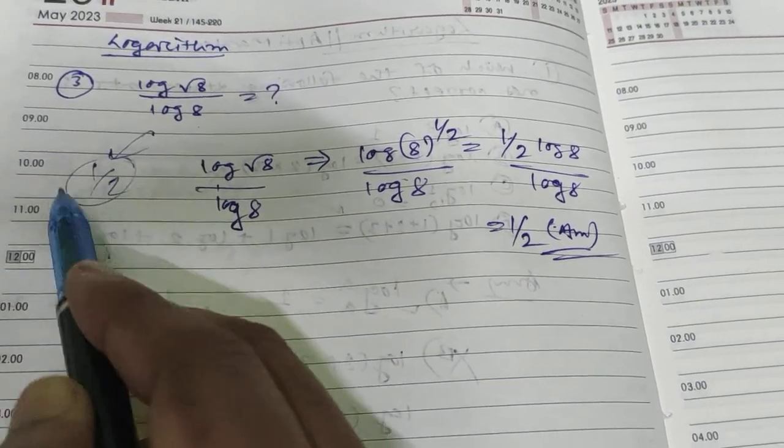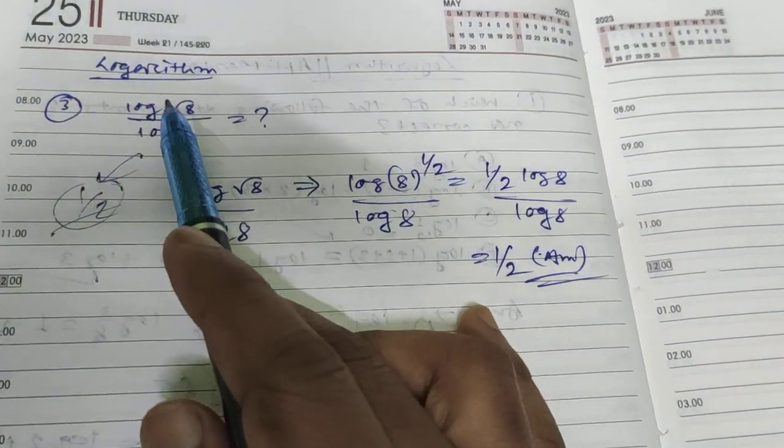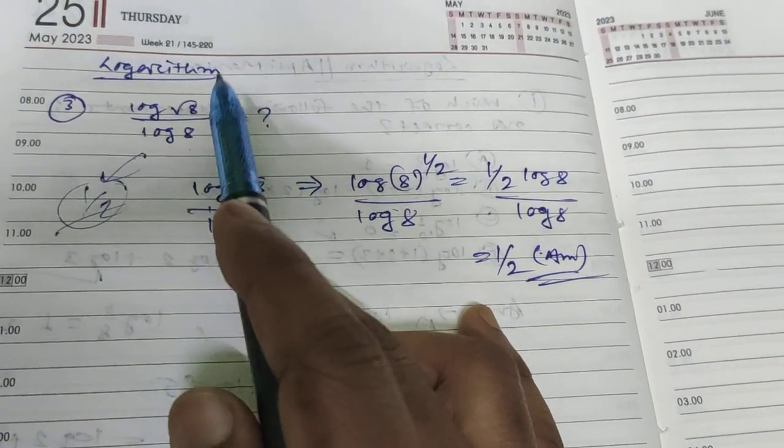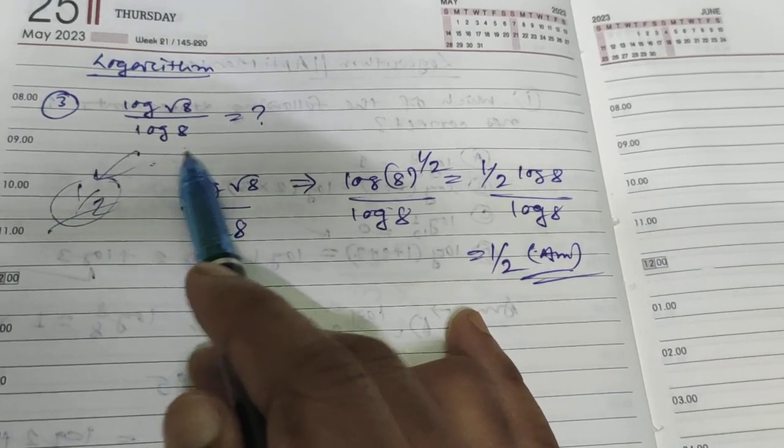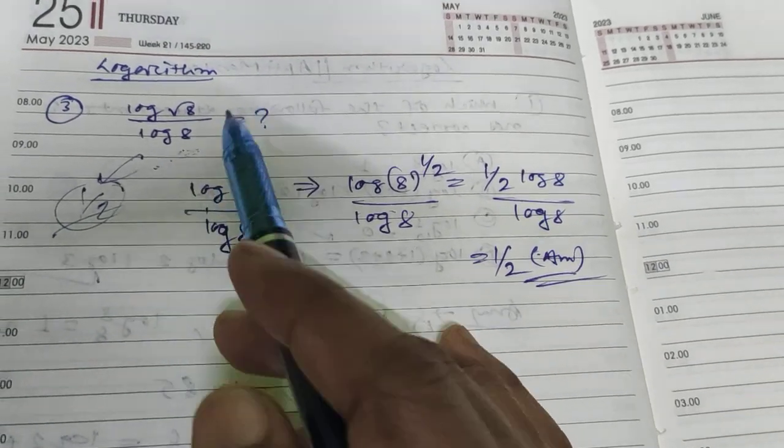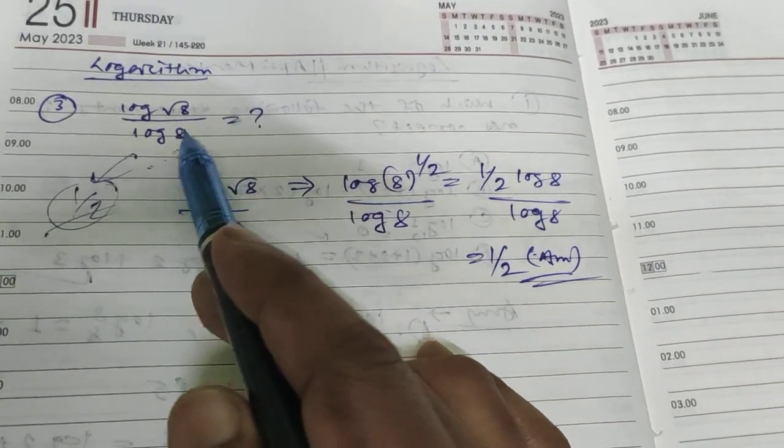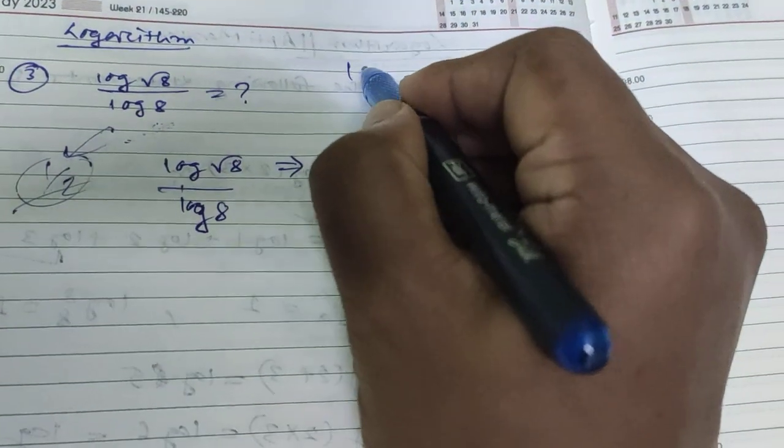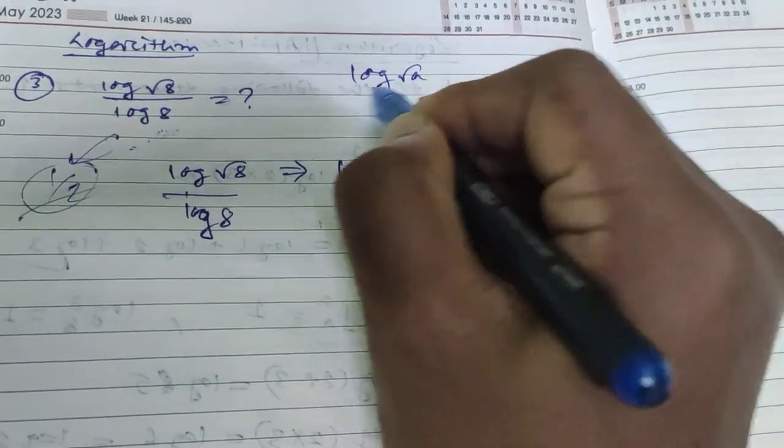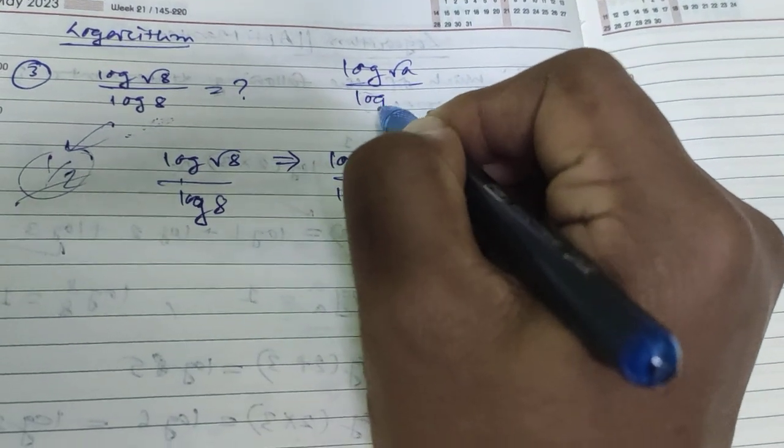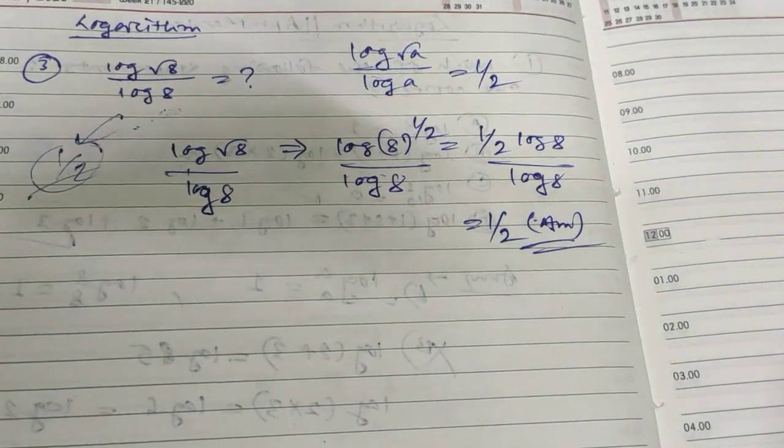In general, log root a divided by log a equals 1/2. This is the general formula you can apply.